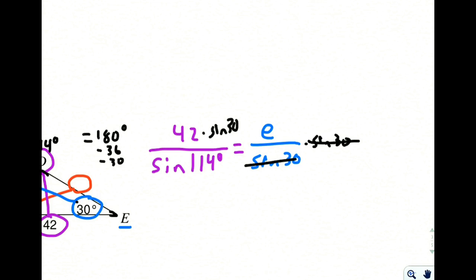And I'm going to be left with my answer over on this side if I just type that into my calculator. So 42 times sine of 30 divided by sine